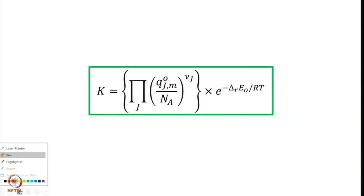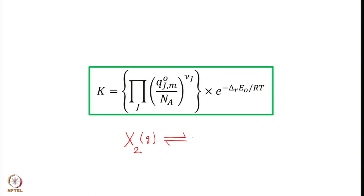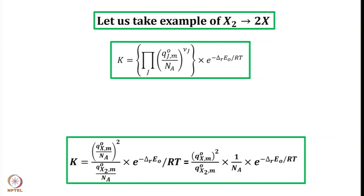The first reaction I will discuss is a dissociation reaction: X₂(g) forming 2X(g). In future I will avoid writing 'g' since we are discussing the gaseous state anyway. Our system is X₂ going to 2X. We apply this expression, where nu_j is positive for products and negative for reactants. For the product X, the stoichiometric number is plus 2.